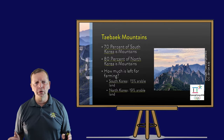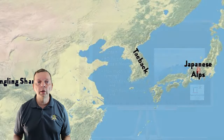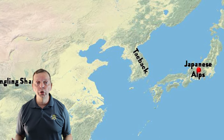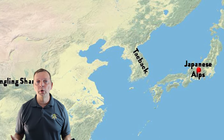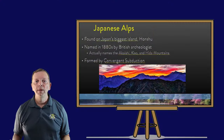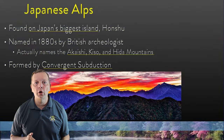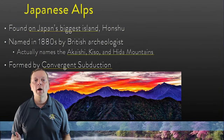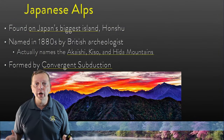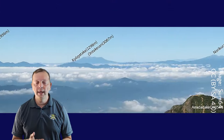The mountains make up over 70% of both countries, meaning less than 20% of the land is actually farmable. On the largest island of Japan, Honshu, we find not only its capital, Tokyo, but also the Japanese Alps. The name 'Alps' was given to these mountains by a British archaeologist around 1880, and it describes three mountain ranges: the Akashi, the Kiso, and the Hida Mountains.